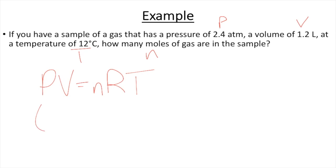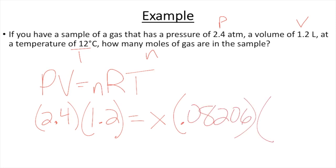So I've got PV equals nRT. So my pressure is 2.4. My volume is 1.2. I need moles. So that's my X. R is always 0.08206. And my T. Hopefully you noticed that my T is in Celsius. And I've got to get it to Kelvin. So to go from Celsius to Kelvin, we add 273. So that gives me 285K.